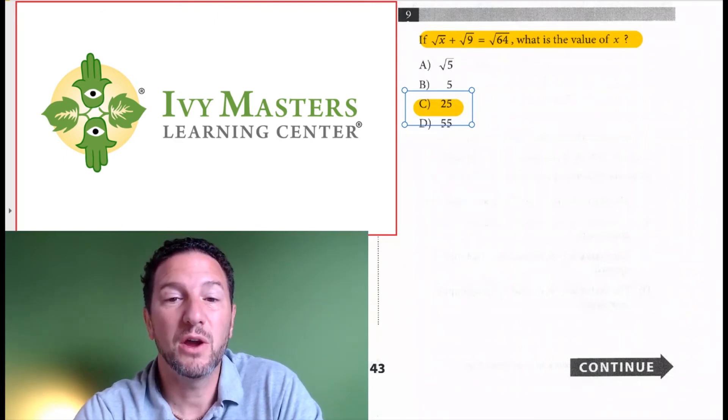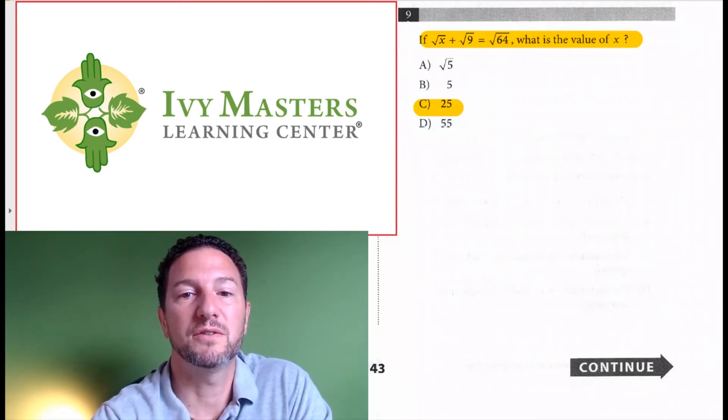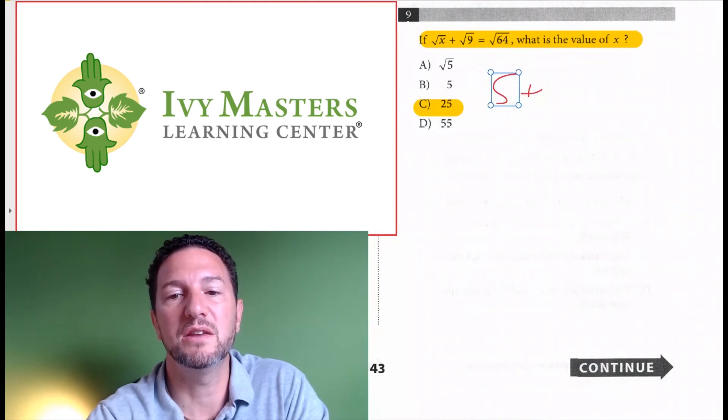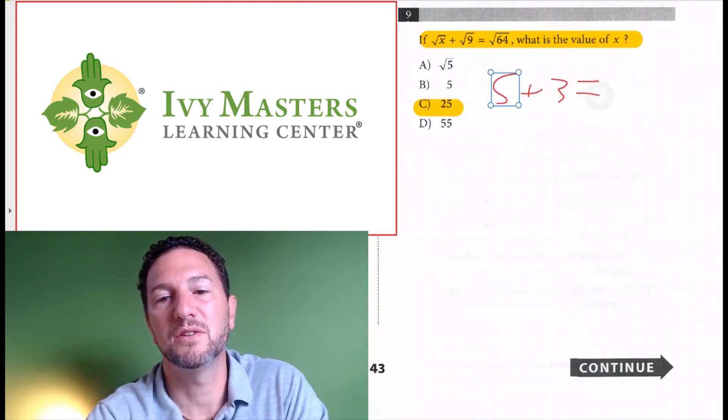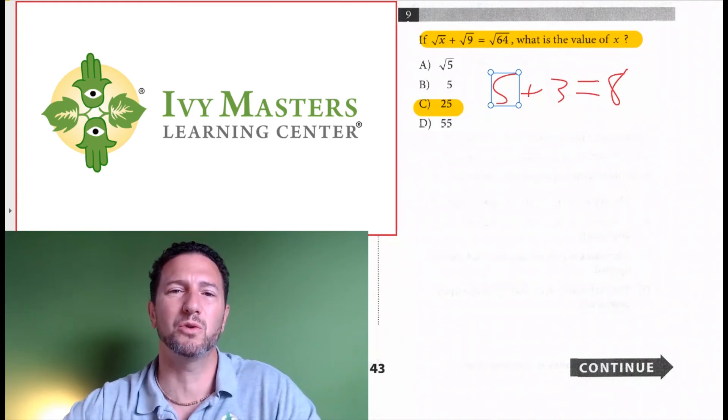Now, if I went through it, the square root of 25 is 5. The square root of 9 is 3. And the square root of 64 is 8. 5 plus 3 equals 8. It works out.